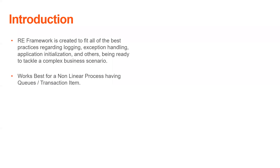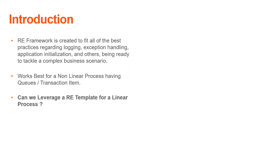The Robotics Process Framework is supposed to work best with non-linear processes, or those having queue or transaction items. For example, if you have a support ticketing process, all the ticket numbers become a queue and you process each item one by one. So it is best suited when you have a non-linear process with queues and transaction items. Now a question arises: can we leverage the RE template for a linear process?